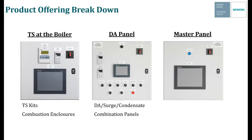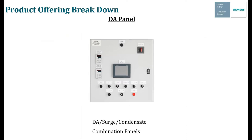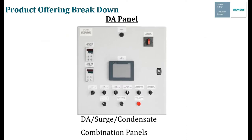Coming back to our product offering breakdown, we've now covered touchscreens at the boiler — the TS kits without LMVs and the combustion enclosures as retrofits in a box. The next item we're going to talk about are the DA panels, where we can connect to a DA, surge, condensate tank, or a combination panel.